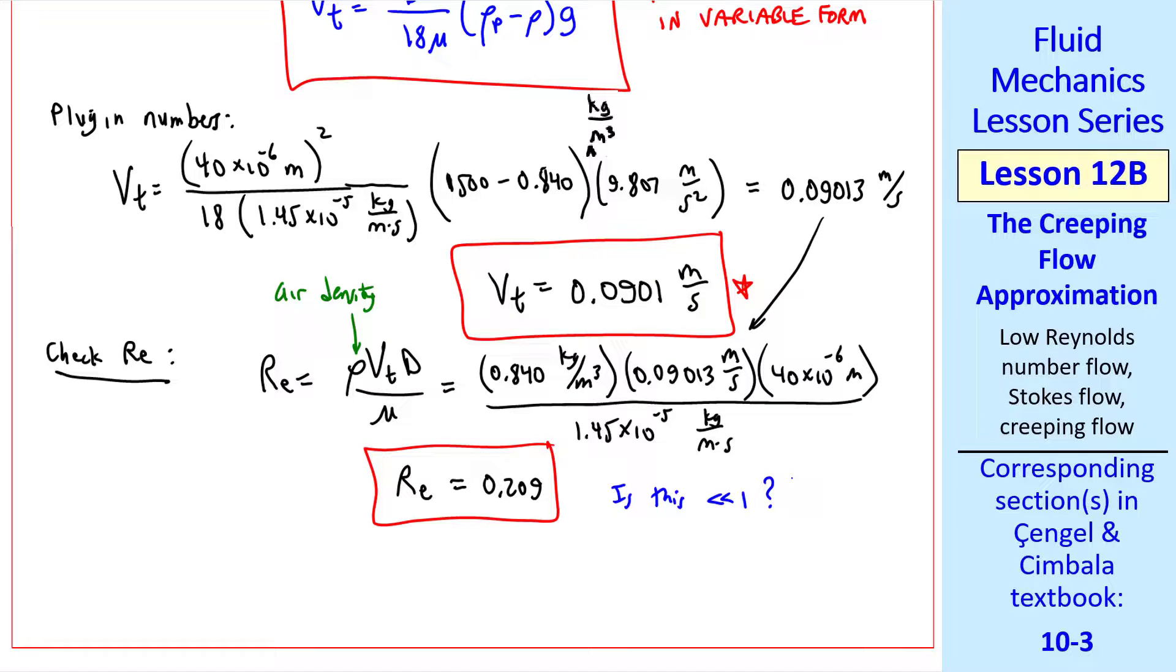Is this much smaller than 1? Not really. So the creeping flow approximation is not strictly valid for this flow. But this terminal settling speed is reasonable as a first approximation. In a later lesson, I'll show how to calculate this more exactly for cases like this where the creeping flow approximation is not strictly valid.